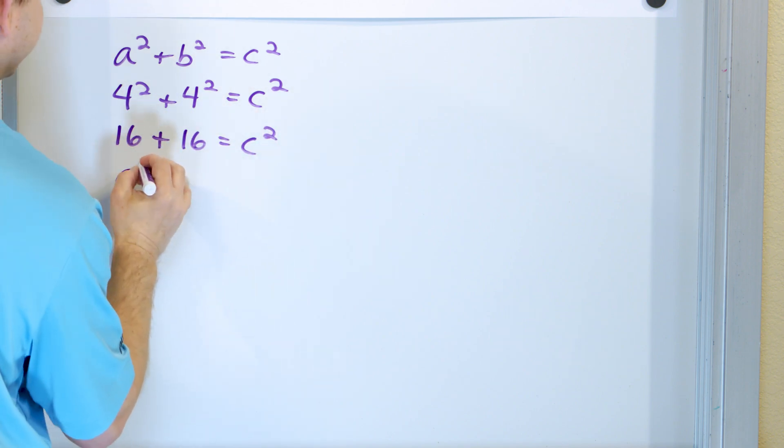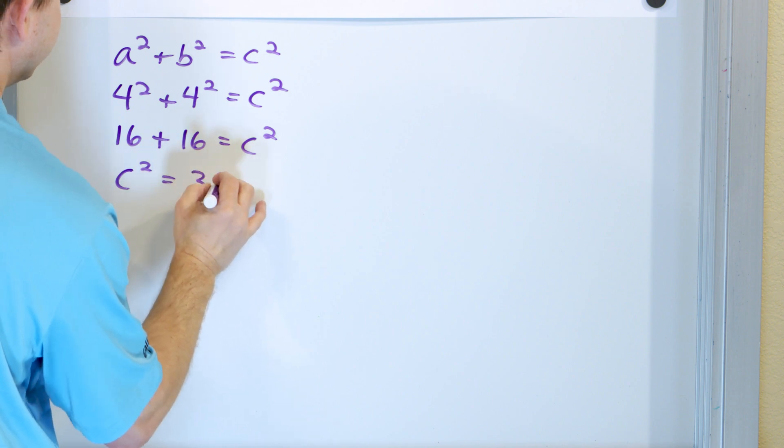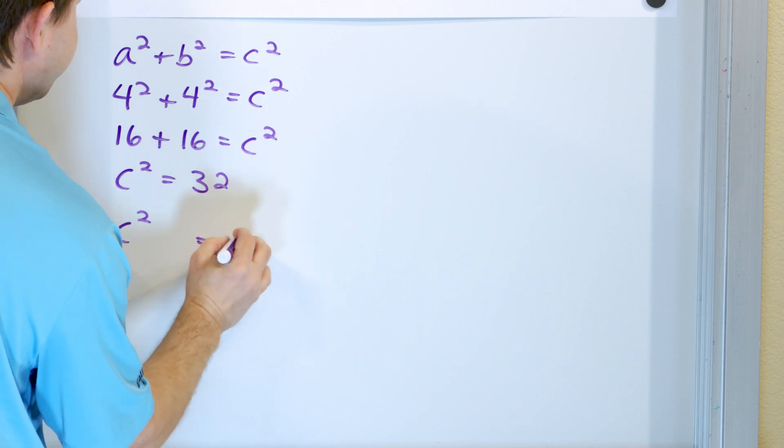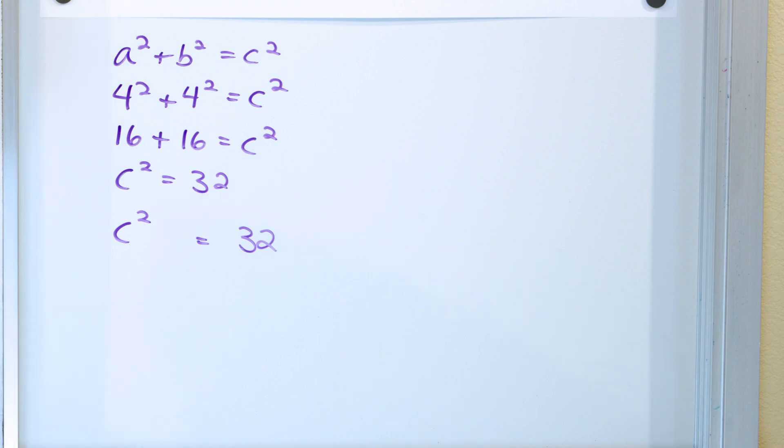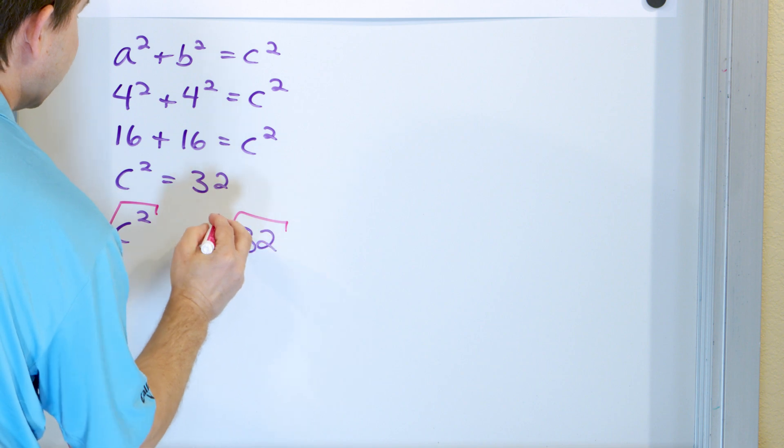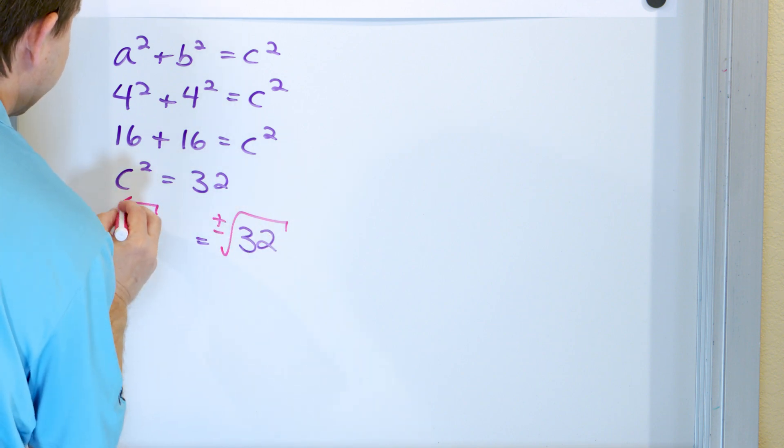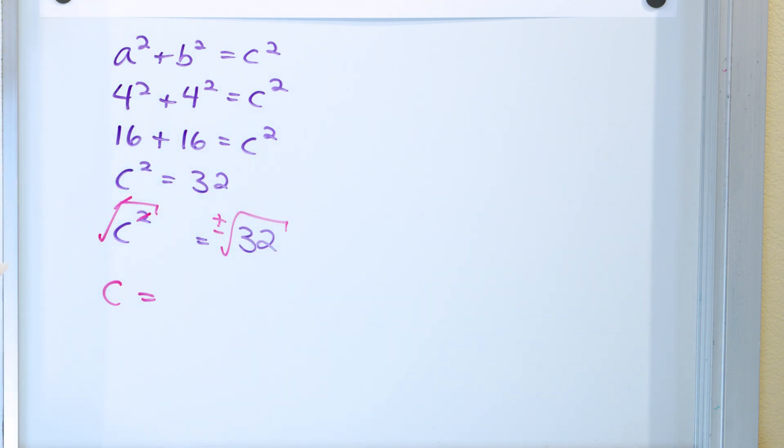And when I flip this around, I get C squared is equal to 32. So I need to solve this. C squared is 32. Now, how do I get rid of that square on the C? I have to do the opposite square root. So I have to take the square root and add that plus or minus. Cancellation will happen. And the distance C will be whatever the square root of 32 is.